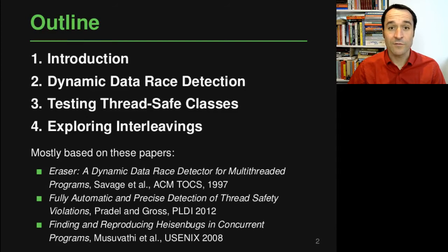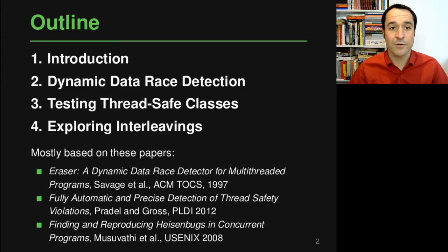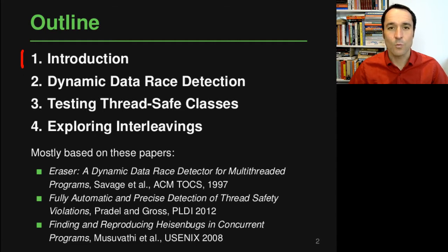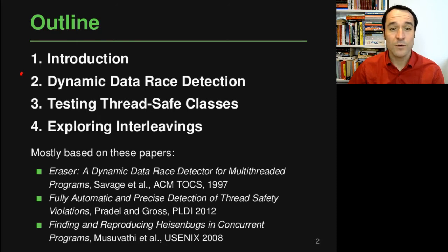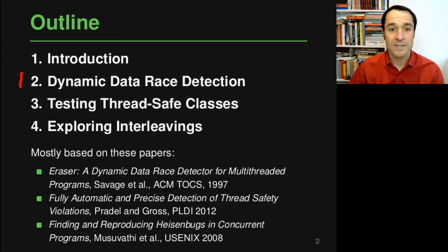Here's an overview of the four topics we will cover in this lecture, each with a separate video. In this first part I will give a brief introduction into what concurrency is and what kinds of problems one might see in concurrent programs. Then we'll have a look at one of these problems, namely data races, and we'll look at a dynamic analysis technique to detect data races.